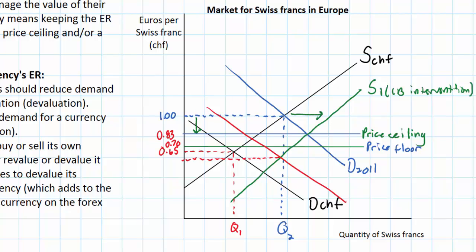If, for example, the equilibrium exchange rate fell to 60 cents, the Swiss National Bank would now have to intervene in the market for Swiss francs by buying its own currency and selling its reserves of other currencies, including the euro, to revalue the franc until it was back at the 70-cent price floor. This new red line represents what would happen if the Swiss National Bank were to intervene — the CB buys Swiss francs to maintain the minimum price floor of 70 cents.